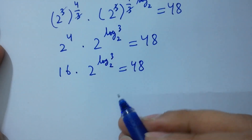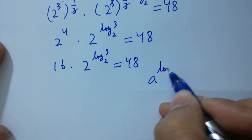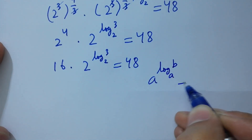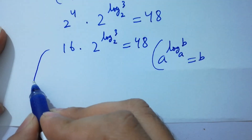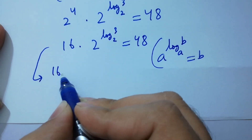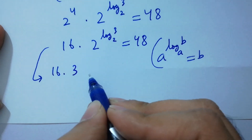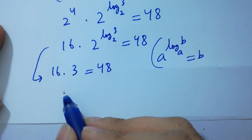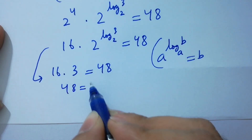As we know, a to the power log B to the base a equals B, it will be 16 times 3 equals 48. And 16 times 3 is indeed 48, equals 48.